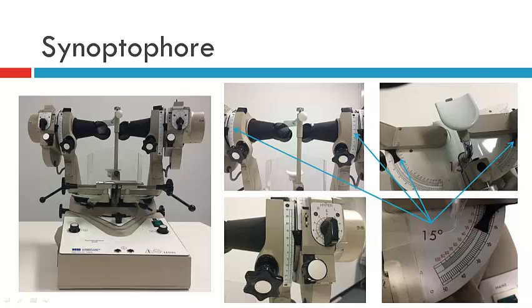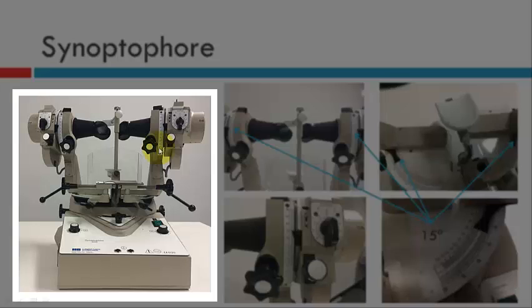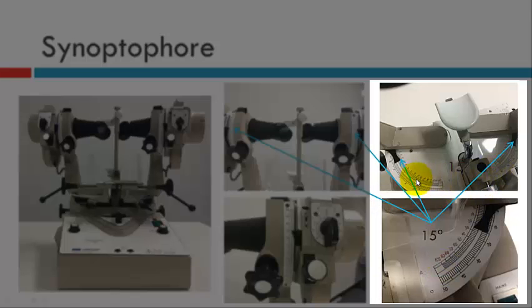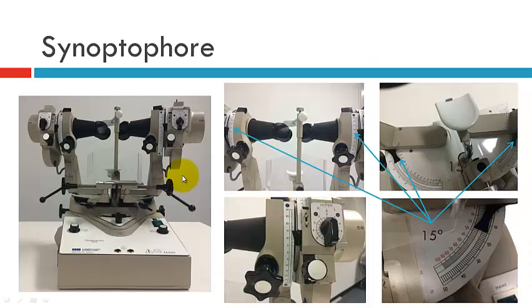Let's look at what it looks like when the tubes have been moved. In this photograph the synoptophore is moved to the right and up — you can see the tubes are elevated. Looking more closely, you can see we've placed the tubes at 15 degrees up here, indicating the patient is in 15 degrees up gaze. For the horizontal component, both the right and left levers have moved into 15 degrees, so we're assessing the patient in dextral elevation.